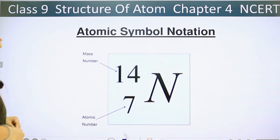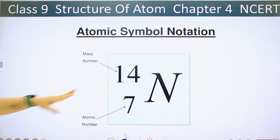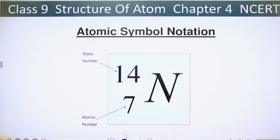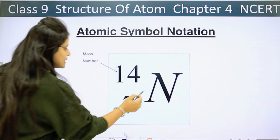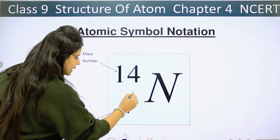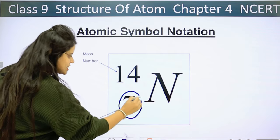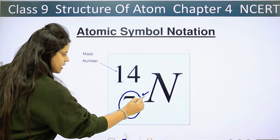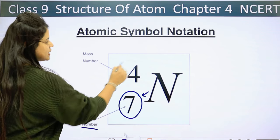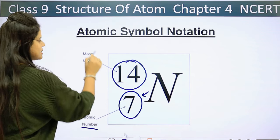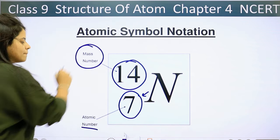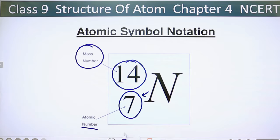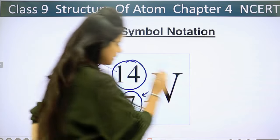Atomic symbol notation — how is the atomic symbol? Like N here. Below the symbol, atomic number is mentioned. And above it, mass number is mentioned.